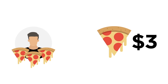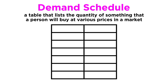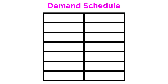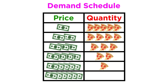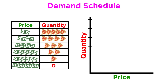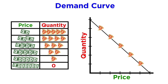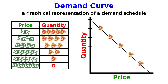We can illustrate this in a demand schedule, which is a table that lists the quantity of something that a person will buy at various prices in a market. In the first column we have the price of a slice of pizza, from one dollar all the way to six, and in the second column we have the quantity demanded — perhaps five slices at one dollar, decreasing by one for every dollar increase, until six dollars per slice is deemed too expensive. Plotting these numbers on a graph results in a downward sloping demand graph, also commonly called a demand curve, which is a more useful way of visualizing this data.